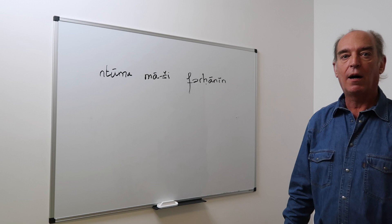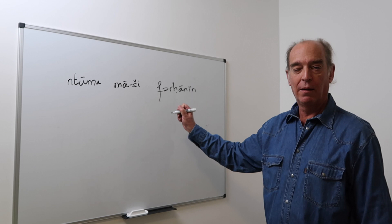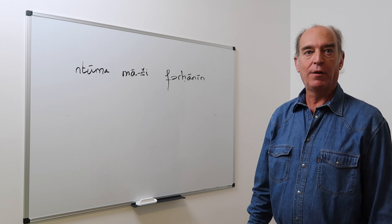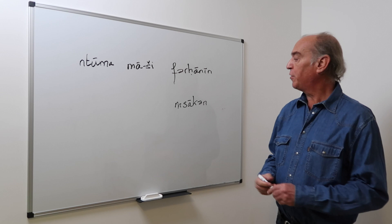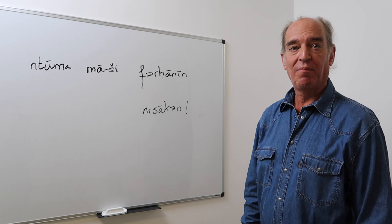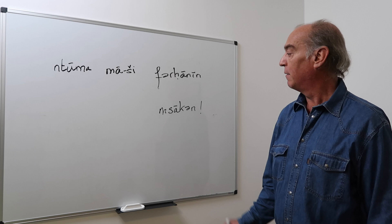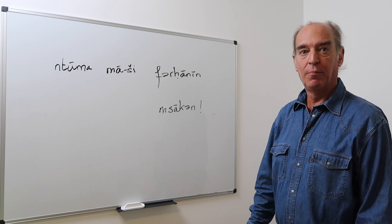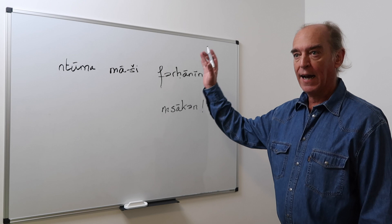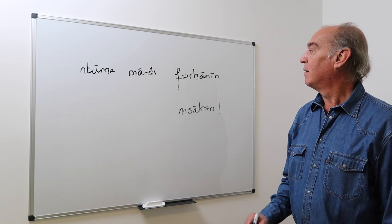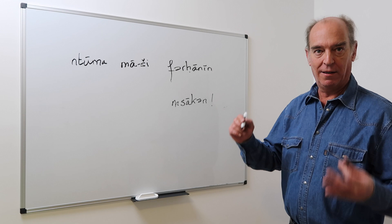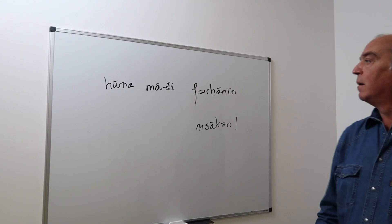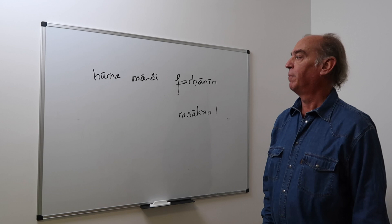You are not happy: Ntuma Mashi ferhaanin. For the plural of Mskin, we use Msaken — because the formation of plural in Arabic is not always predictable. So remember: ferhaan, ferhaana, ferhaanin — a regular formation. But Msken, Mskena, and Msaken for the plural — this is called a broken plural; we'll talk about this next time. And for third person plural: Huma Mashi ferhaanin.